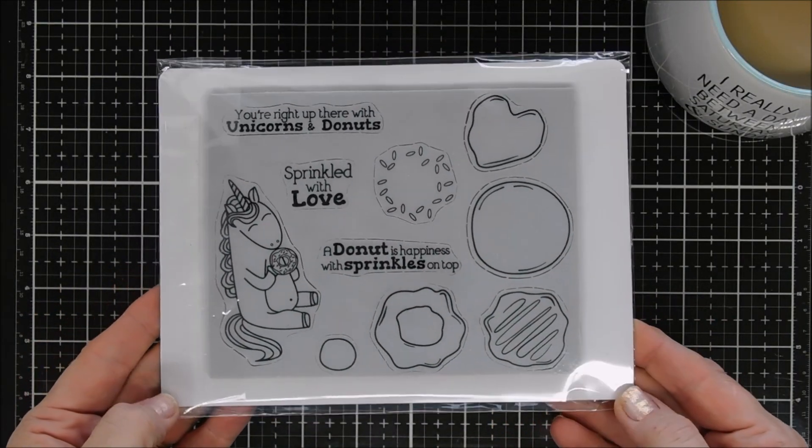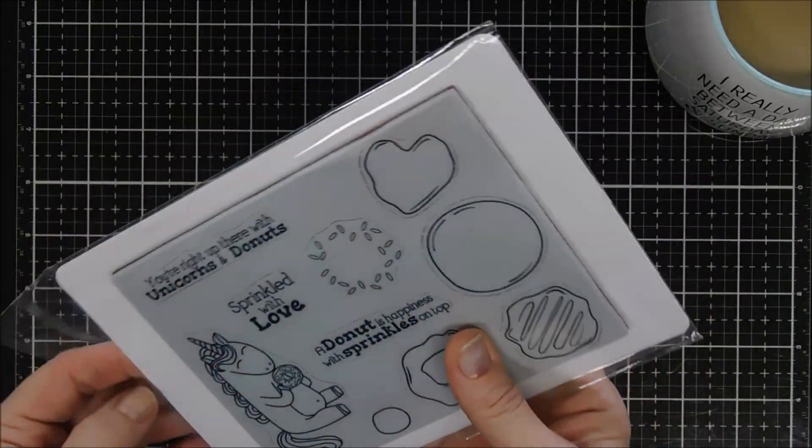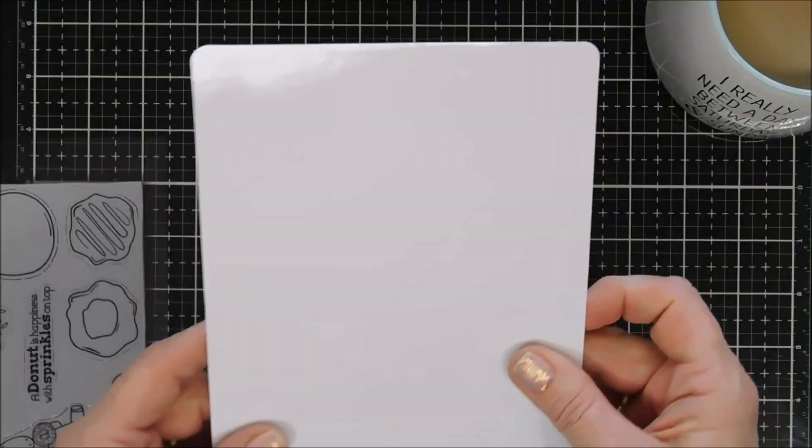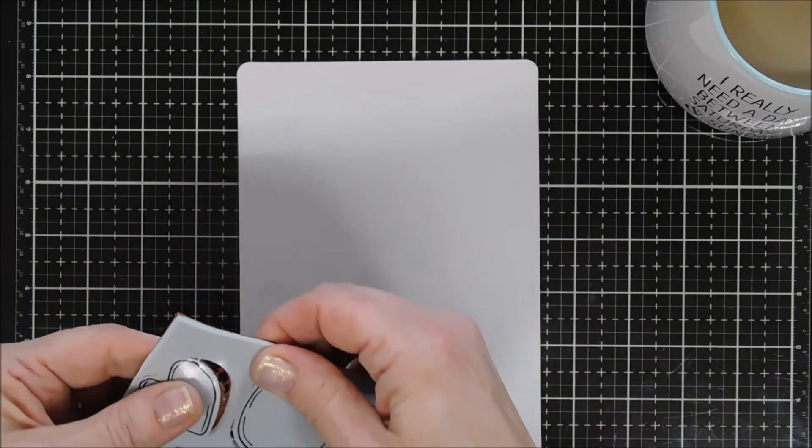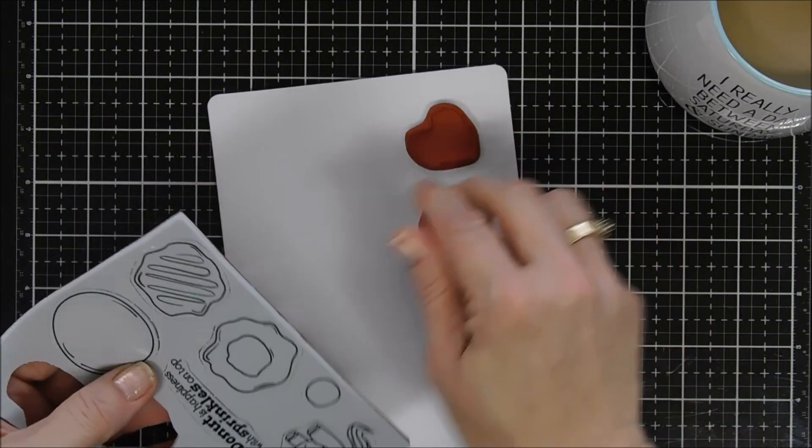It's called Sprinkled with Love this month. A lot of donuts that you could build upon and there's a cute little unicorn in here. It comes with a storage sheet which is nice. All you do is remove your stamps, which are red rubber and they punch out really easy, and then you can stick them down on that storage sheet.